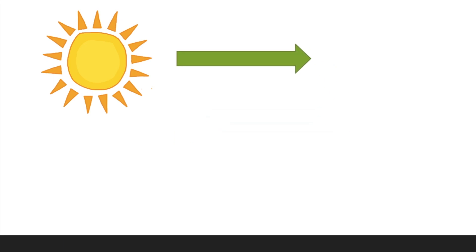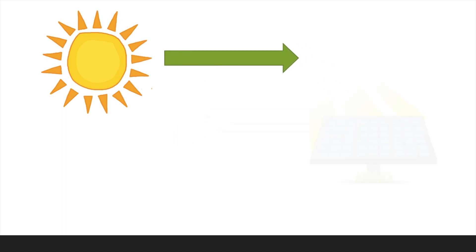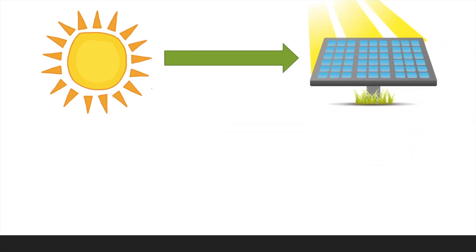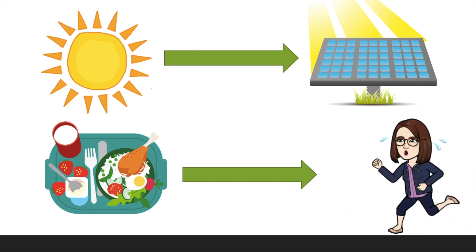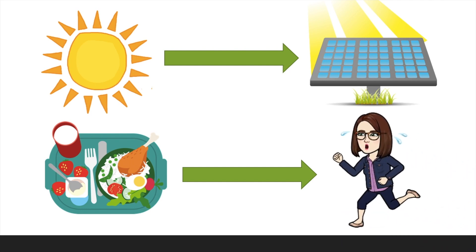What about our sun? Our sun's energy can be converted as well through solar panels. Solar panels can take energy from the sun and convert it to electricity, electrical energy, and also sometimes heat energy to heat water. What about food? Food can also be converted, which is chemical energy, and it can give us the energy that we need to run and do our daily tasks.